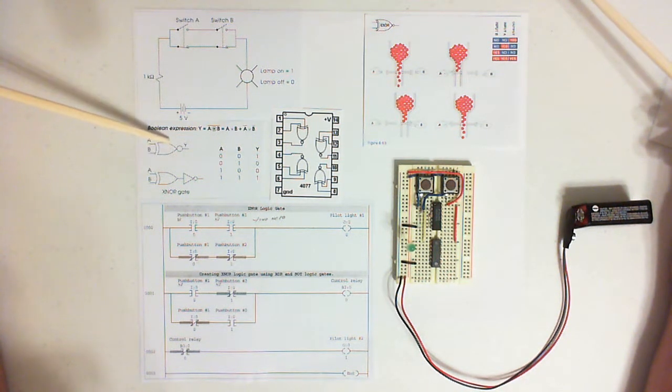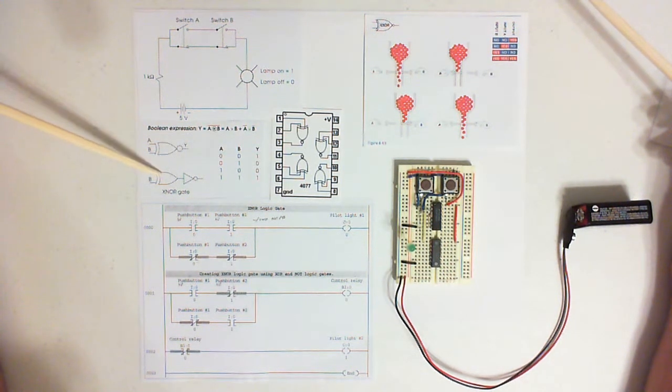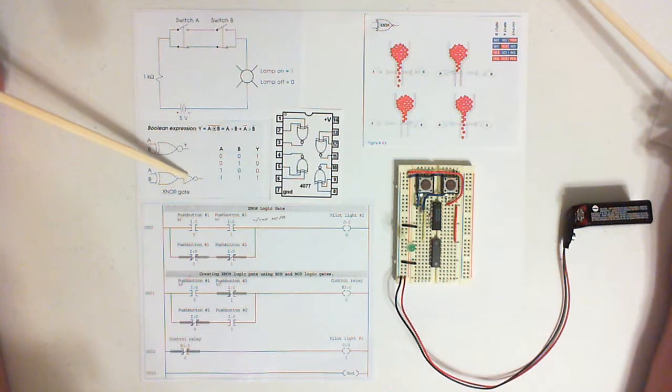What we have here is the logic symbol for an X-NOR gate. You have two ways of showing it. I'll show it this way, similar to an X-OR gate with a little doohickey added to the end, making it an X-NOR gate. Same thing right here, X-OR gate with an inverter, making it an X-NOR gate.